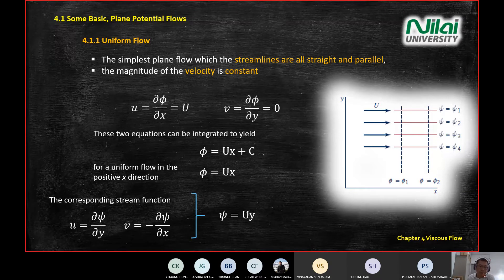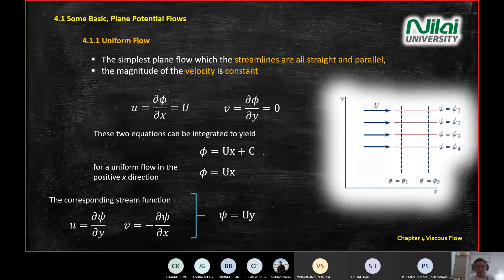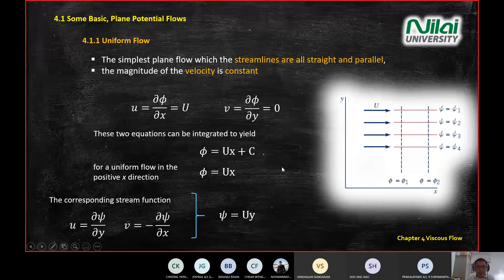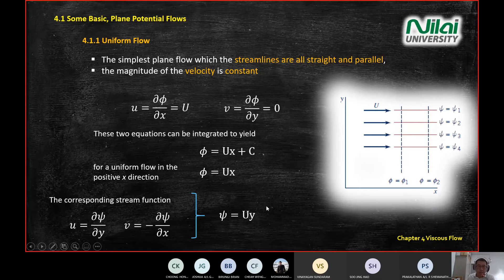This is just a normal introduction to the mathematical model for defining uniform flow. Based on your calculation and the structure of the equation, you can state that you have a uniform flow inside the pipe or system. These are the general equations to tell you what is happening inside the system when you have a uniform flow.